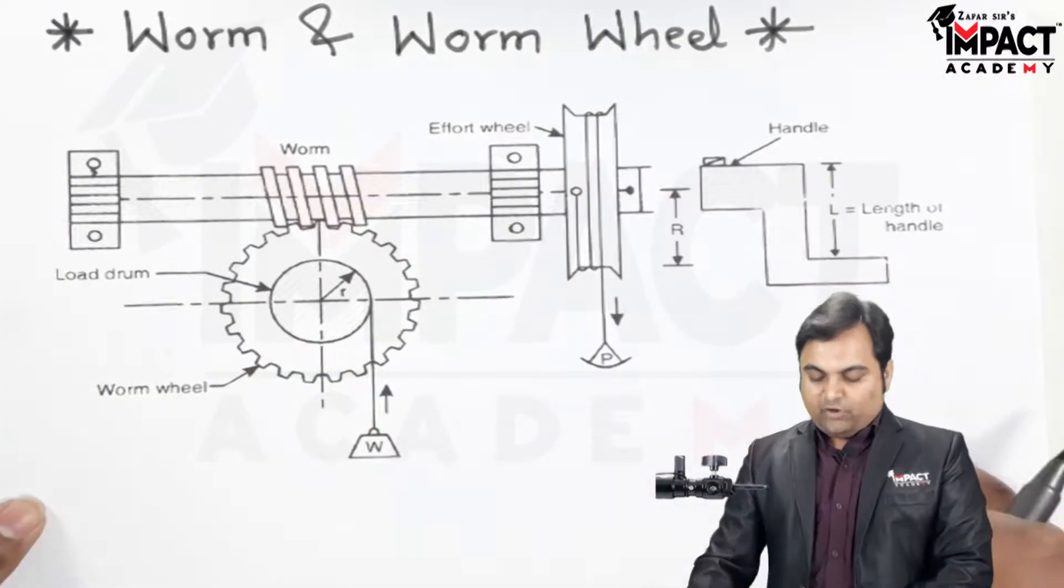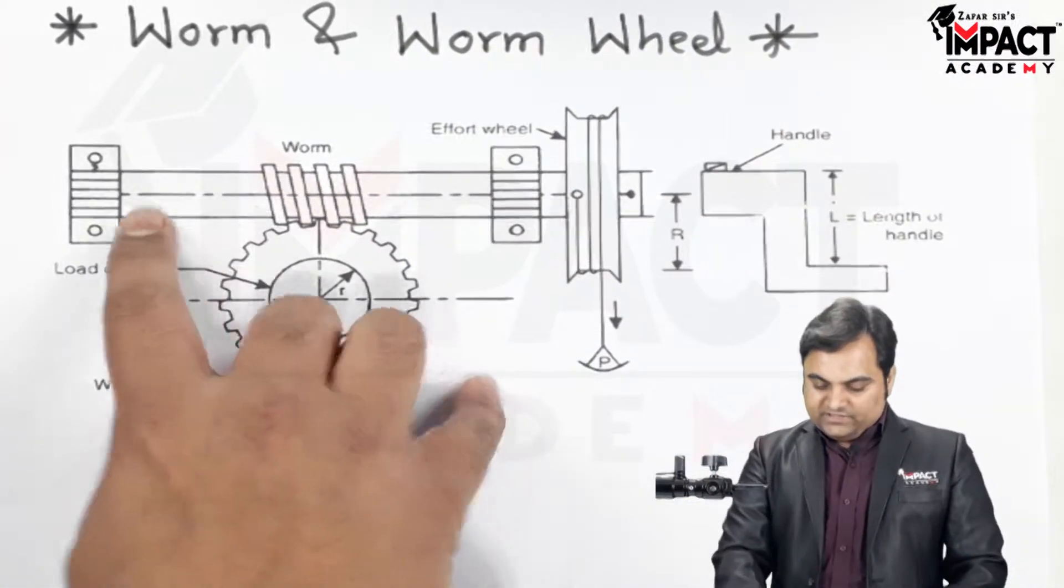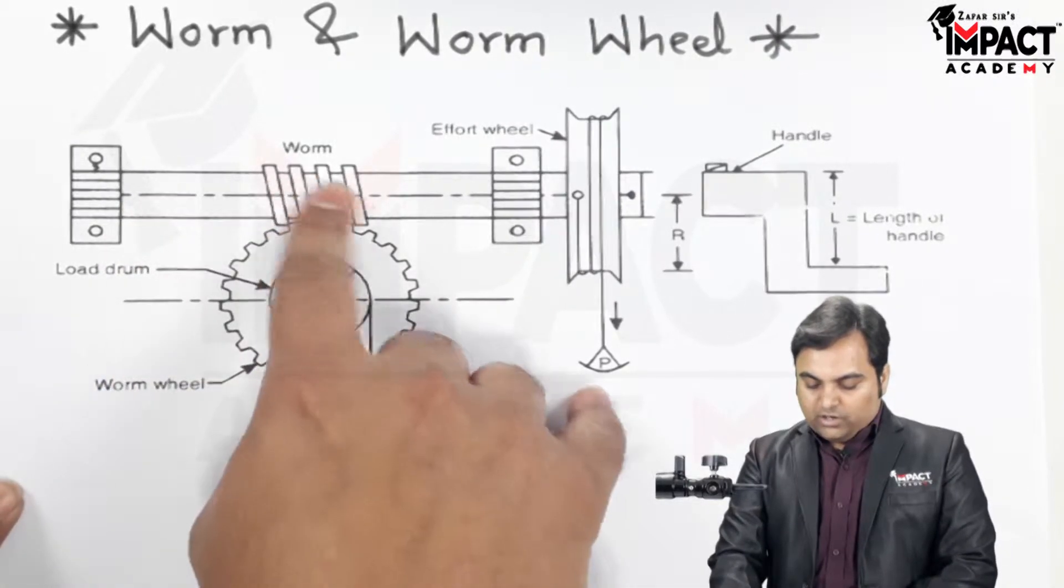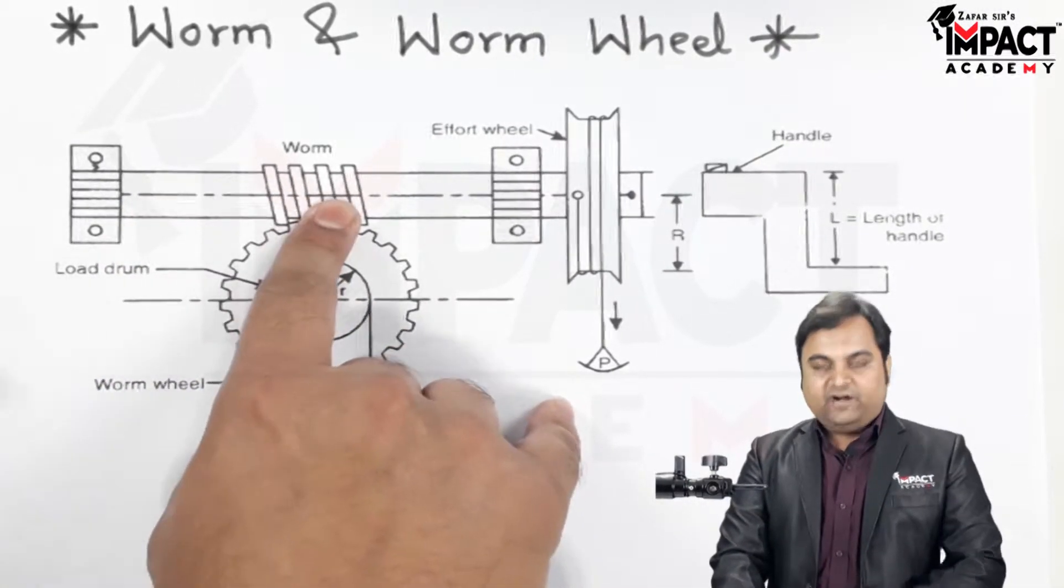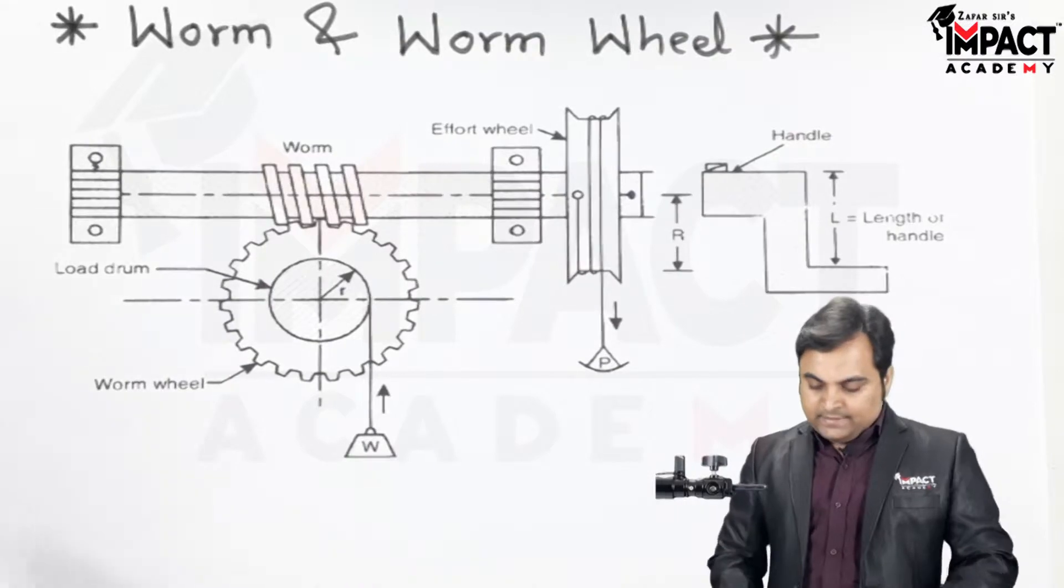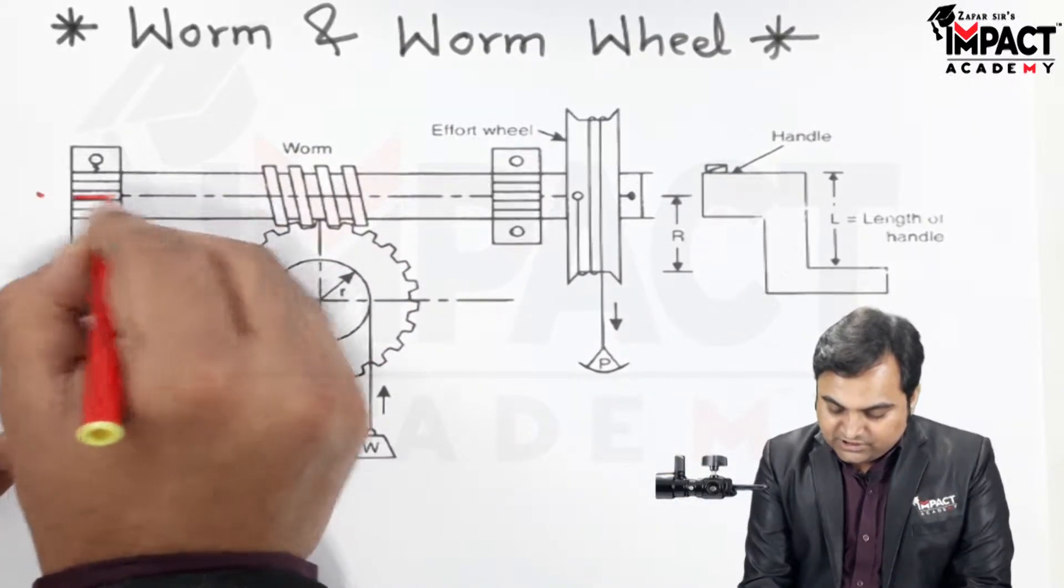Now here is the diagram of a worm and worm wheel. This is called a worm, which is a threaded shaft, and this is the axis of the shaft.